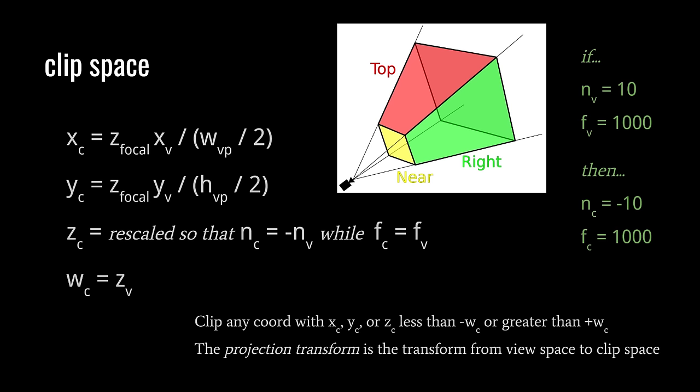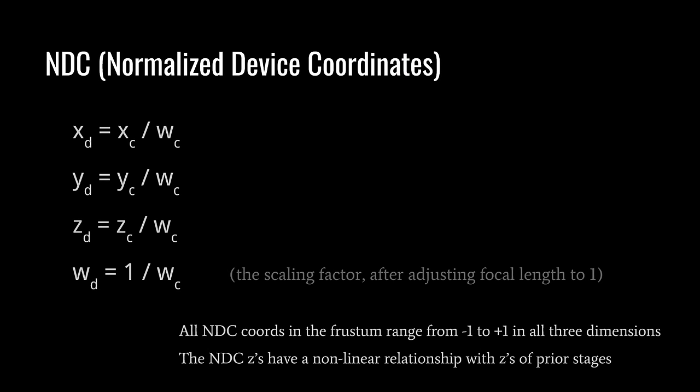To understand the other reason why we do this funny rescaling of the z's, consider what happens next when we translate into normalized device coordinates. That's done simply by dividing the x, y's, and z's of clip space by the w of clip space. For the w of device coordinates, we just take the inverse of the clip space w. After dividing by w, we've accounted for perspective, and also all of our coordinates are now in the range of negative 1 to positive 1 — because our clip tests bounded vertices in the range of negative w to positive w, so dividing by w brings the new values into the range of negative 1 to positive 1.